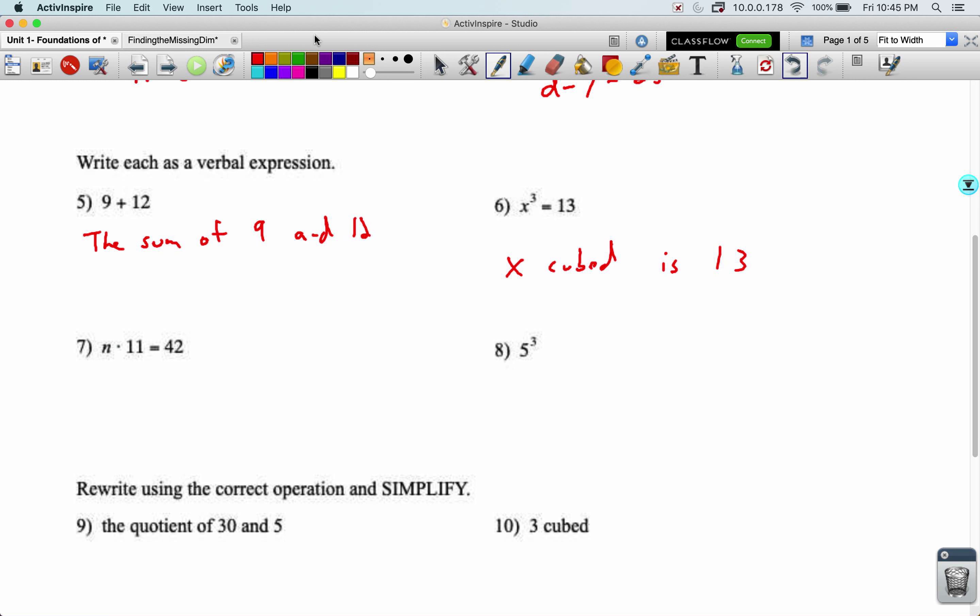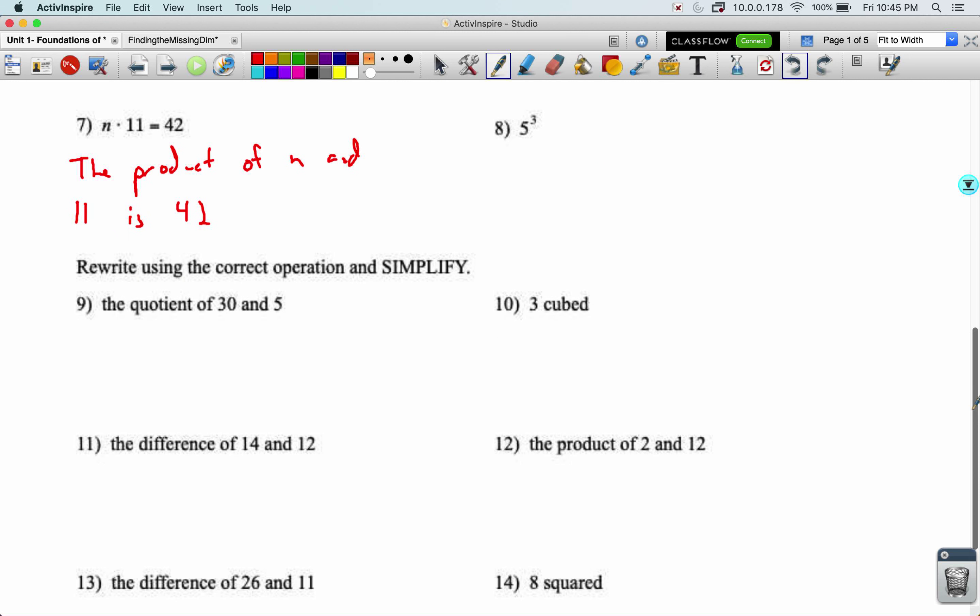Here's one we haven't seen that multiplication. The word we're going to use for that is product. So the product of n and 11 is 42. And then number eight is five cubed.